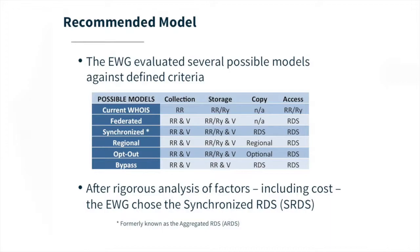The other models we looked at were the regional model, where the data is copied to several regional hubs; the opt-out model, a combination of the synchronized and federated models, essentially allowing registries a choice of either one; and then the bypass model, where the data is passed from the registrars directly to the RDS, skipping the registries. A number of these models actually came from the community, which is why we included and analyzed them.